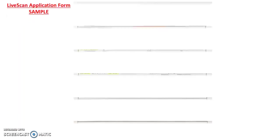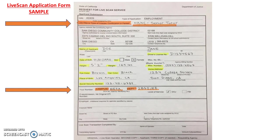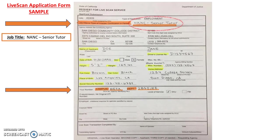Let's begin with the live scan application form. You will fill out the request for live scan service as indicated. Please note that what appears in orange needs to be copied exactly as it appears in this example. Your job title is Nance Senior Tutor, and the campus is Mesa.